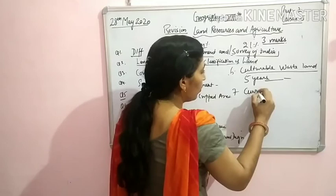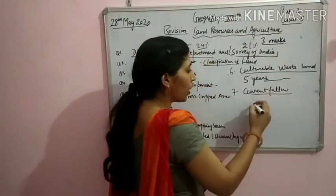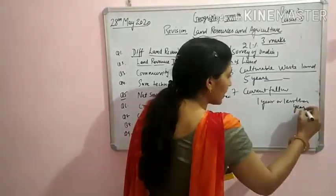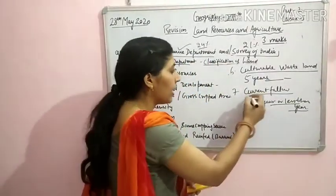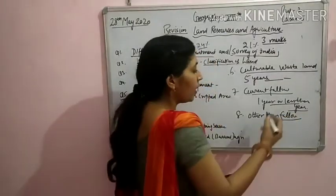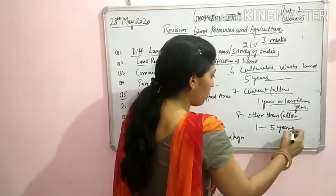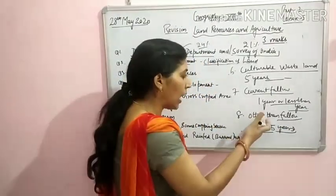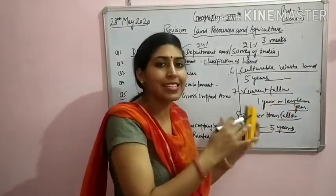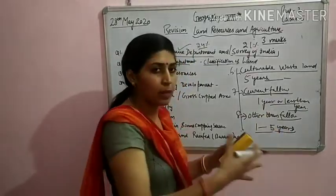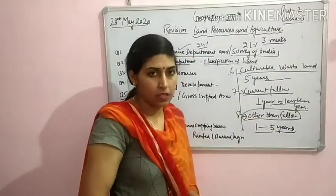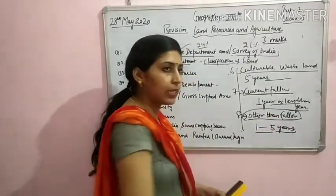Next is current fallow — current fallow land is the land that has been left empty for one year or less than one year. When land is left uncultivated for one year or less, it is called current fallow. Next is other than fallow — land left empty for a duration of one to five years comes under other than fallow. And cultivable wasteland means the land that has been left empty for more than five years.